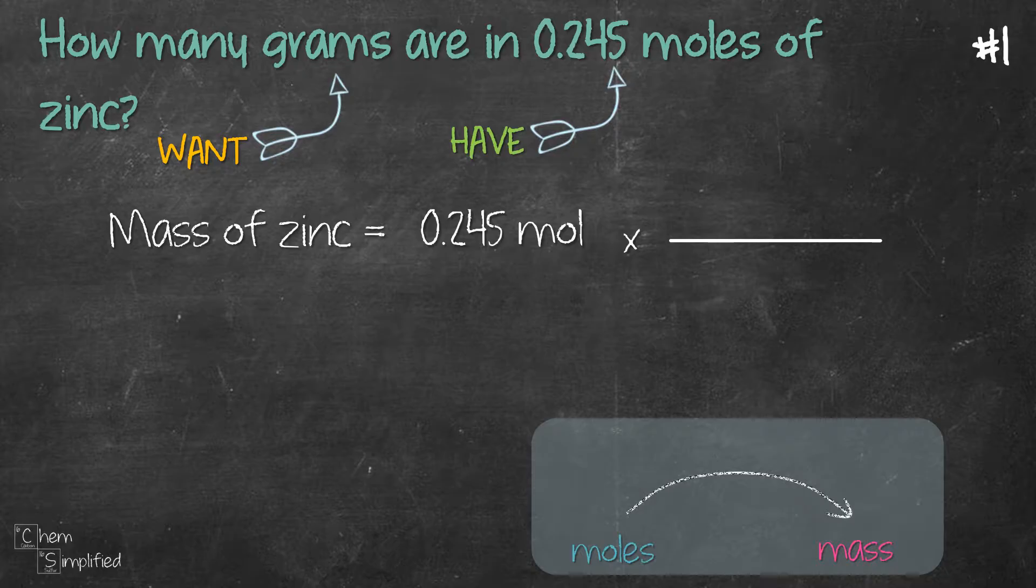Place what we want to get rid of at the bottom, which is moles, and then it will cancel out, and then we place what we need to find on top, which is the grams of zinc.